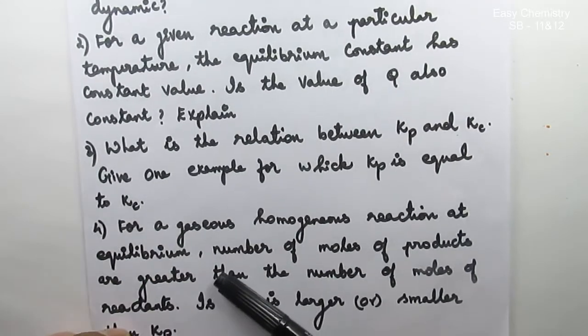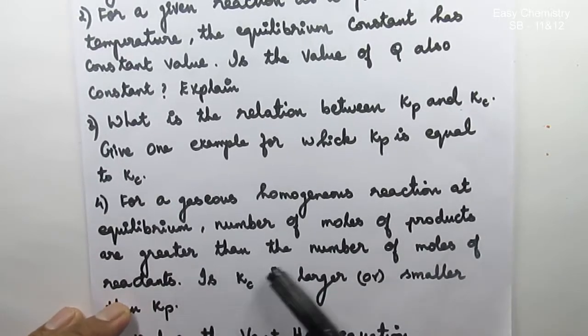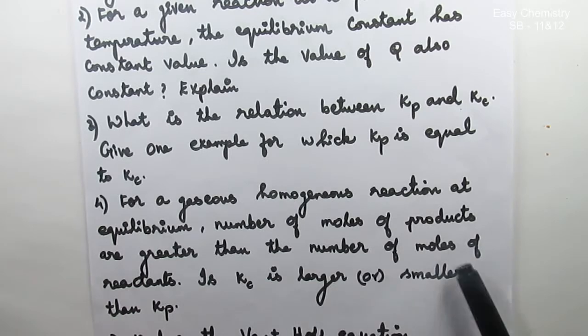Question number 4: For a gaseous homogeneous reaction at equilibrium, number of moles of products are greater than number of moles of reactants. Is Kc larger or smaller than Kp?